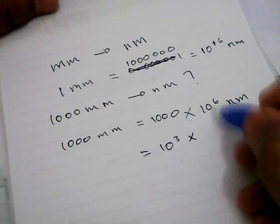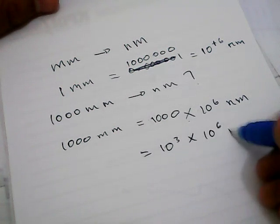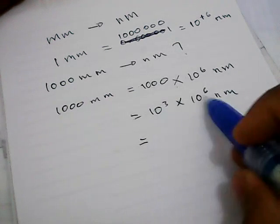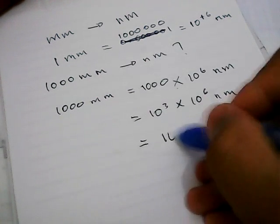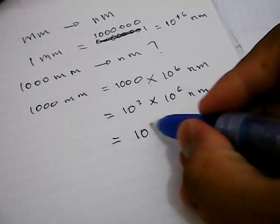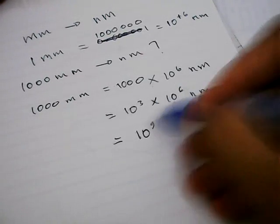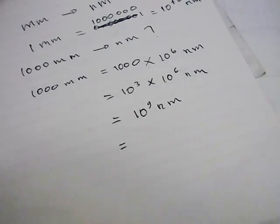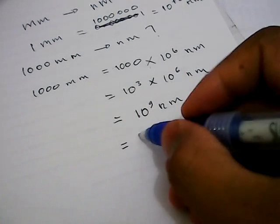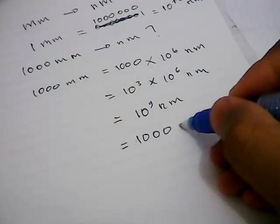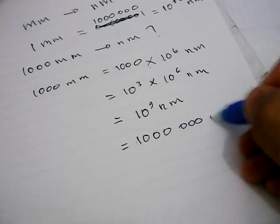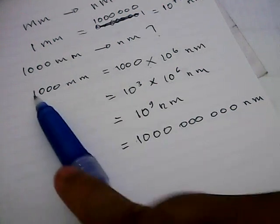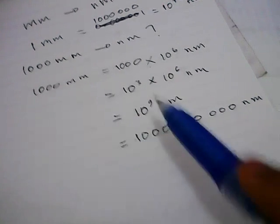You multiply it with 10 power 6 nanometers. Well, 10 power 3 multiplied by 10 power 6 is equal to 10 power 3 plus 6, which equals 10 power 9 nanometers. In another way, you can write this number as 1 billion nanometers.